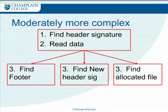A slightly more advanced approach is: we find the header, keep reading the data, and if we find a new header signature, that would also indicate we're onto a new set of data — so we'd stop reading at that point. We have a chunk of file, but we don't know where the rest is or whether we've actually got the end of it. If we find an allocated file — obviously when you're looking at unallocated space, all that data is fragmented.